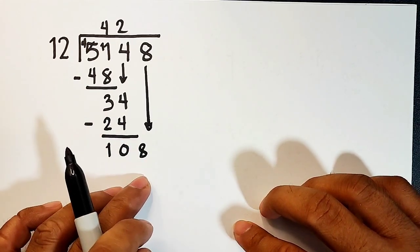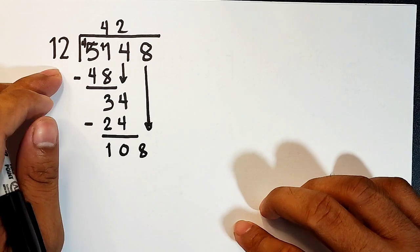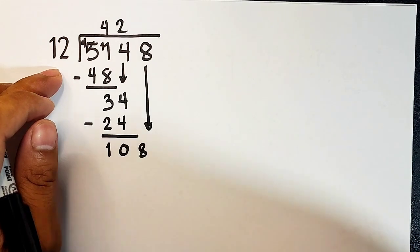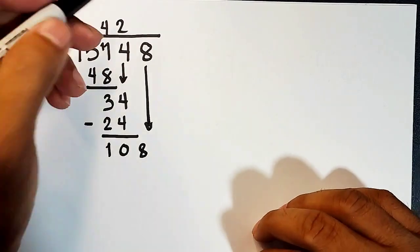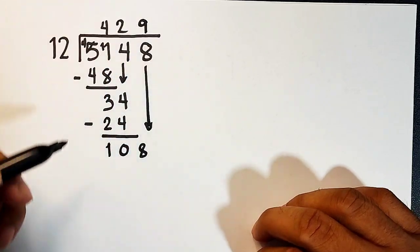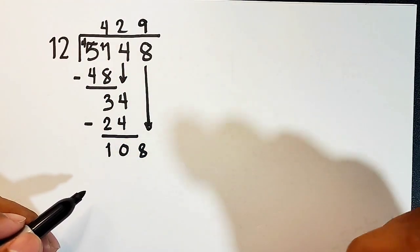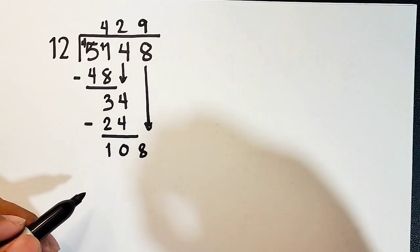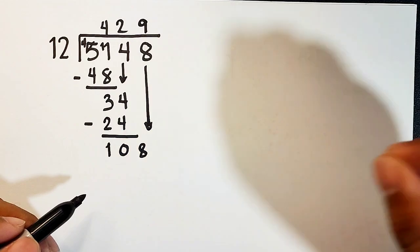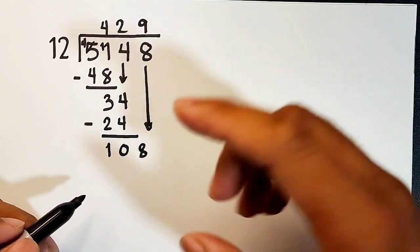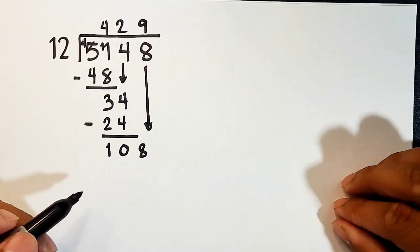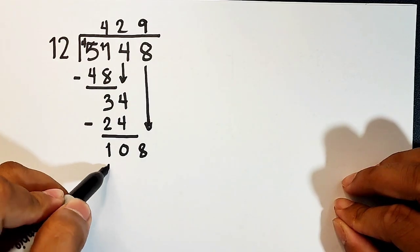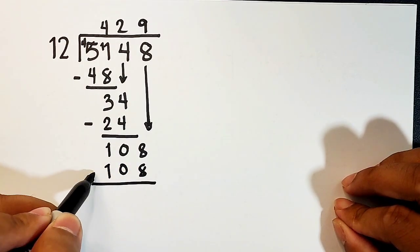Now, 108 divided by 12 is 9. We have 9 twelves inside 108. Because 12 times 10 is 120. I think 120 minus 12, that is 108. So this one is an exact number. So 9 times 12 is definitely 108.